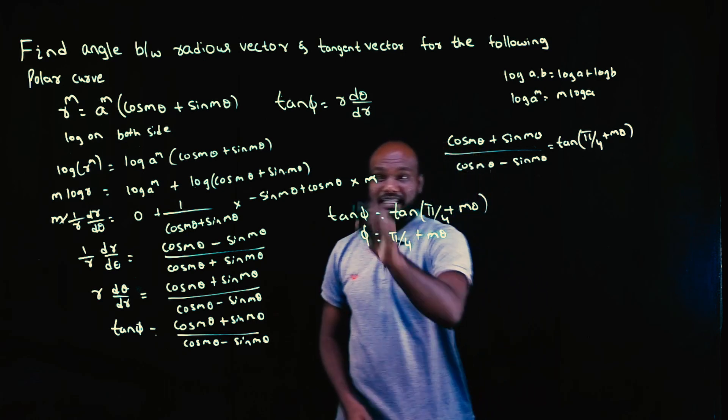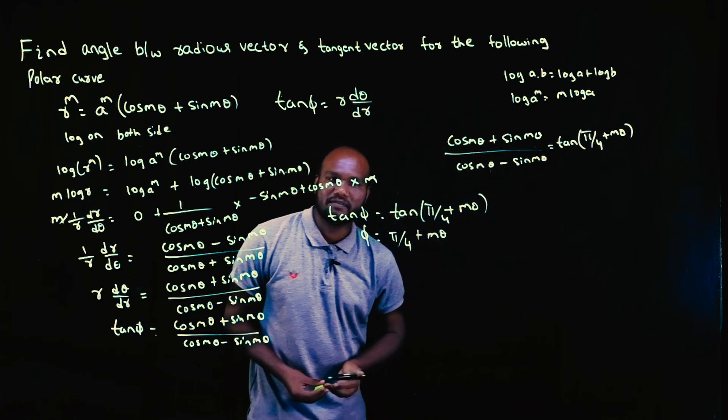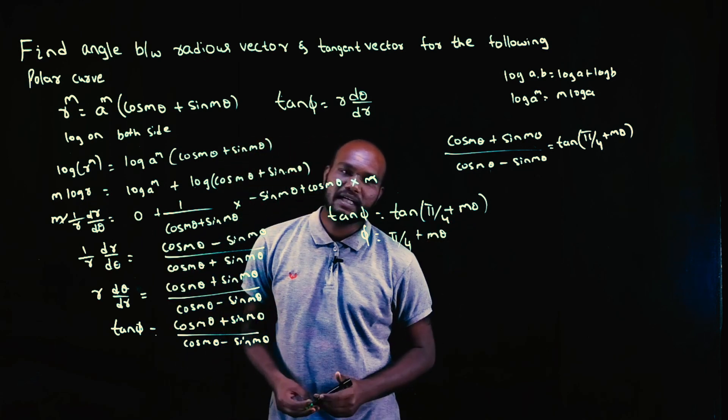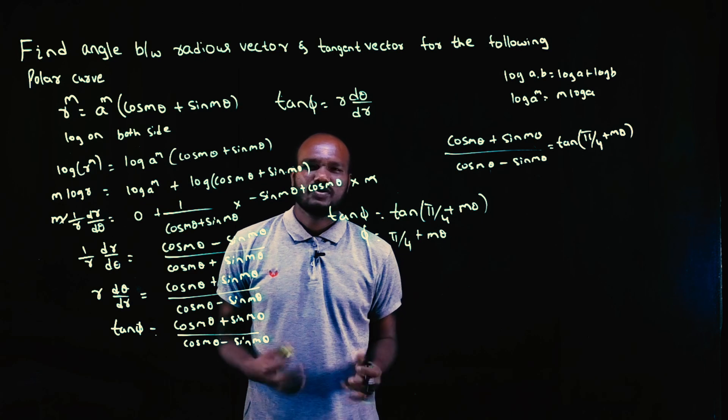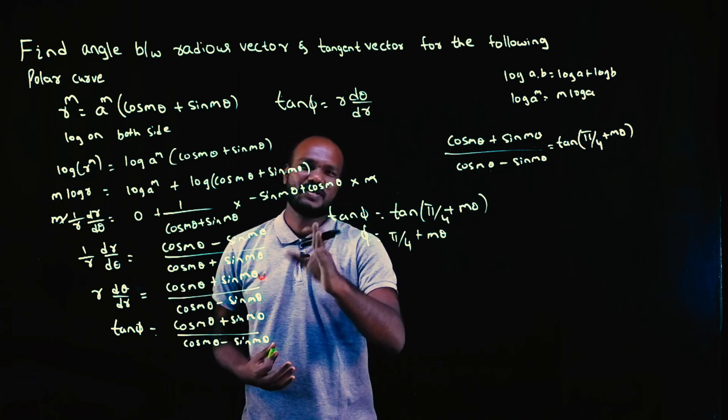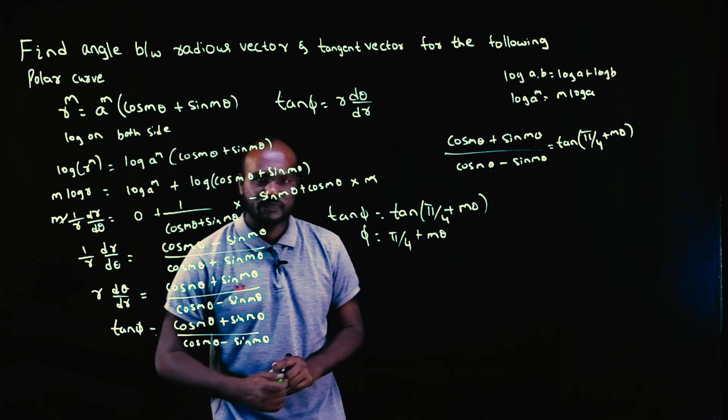Technically you should take tan inverse on both sides, which cancels with tan. Since this is in the first quadrant, you can simply think of it as tan and tan getting cancelled. Either way, phi equals pi/4 plus m theta is the answer.